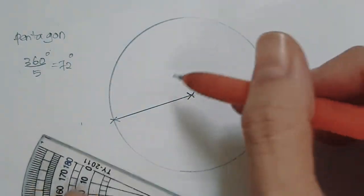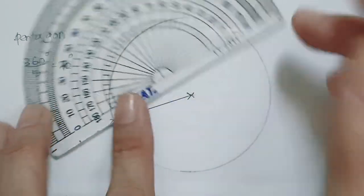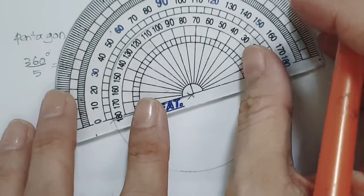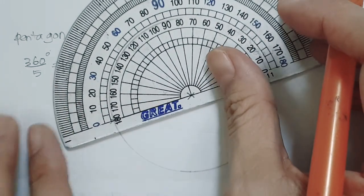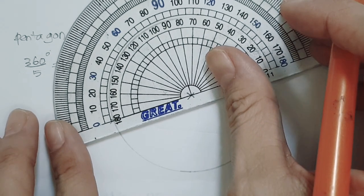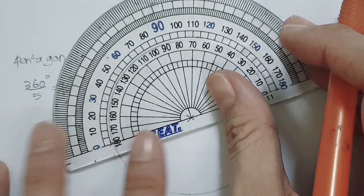All right, so this will be our baseline. From this baseline let's measure the angle that we want. We shall put the center of the protractor onto the center of the circle, and from here look for 72.